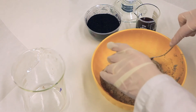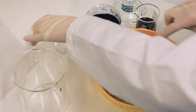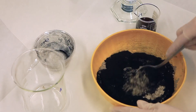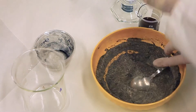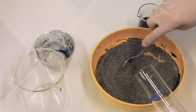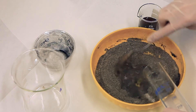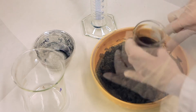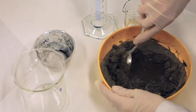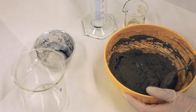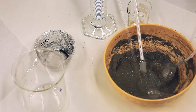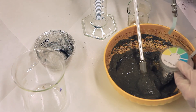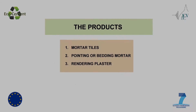Then the sand, the rice ash, the urea solution, and the re-vitalized biomass are added. All the components are blended for 3 to 4 minutes while controlling the temperature and the pH.